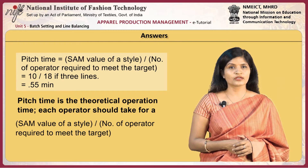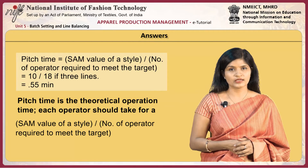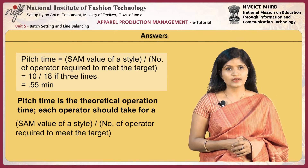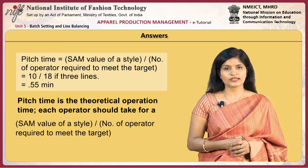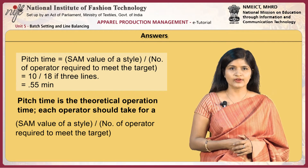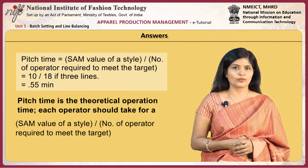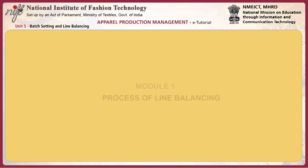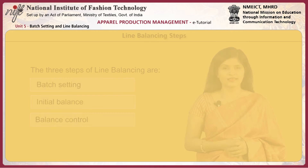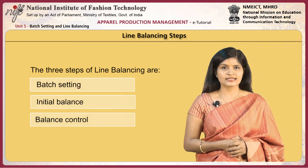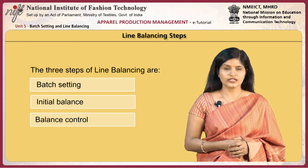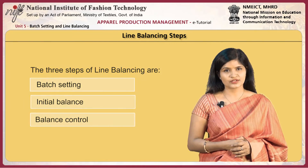Pitch time is a theoretical operation time each operator should take for the planned balanced line. It is calculated as the SAM value of the style divided by the number of operators required to meet the target. Line balancing has three steps: batch setting, initial balance, and balance control.